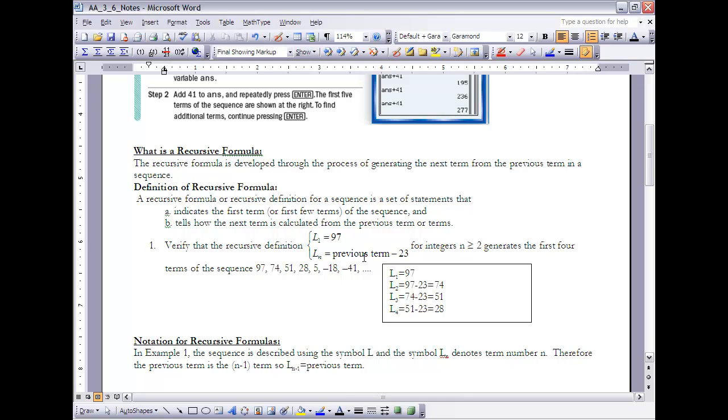Then to find L sub 3, I'm going to take the previous term. The previous term to L sub 3 is L sub 2, so I'm going to take 74 minus 23, or 51. For L sub 4, I'm going to take the 51 minus 23, which is 28. And you can see the first four terms match this sequence here.